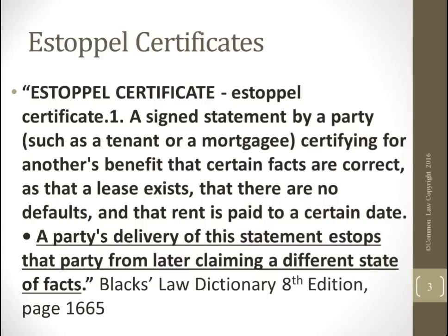An estoppel certificate is a statement signed by a party such as a tenant or mortgagee, certifying for another's benefit that certain facts are correct — that a lease exists, that there are no defaults, and that rent is paid to a certain date. A party's delivery of that statement stops them from later claiming a different state of facts. That's Black's Law Dictionary, 8th edition.